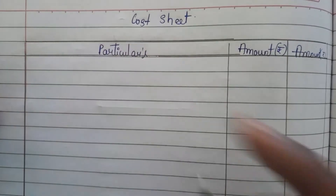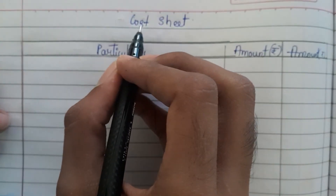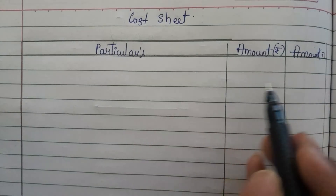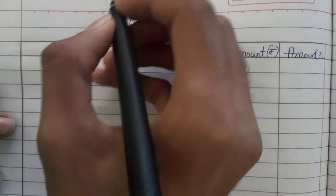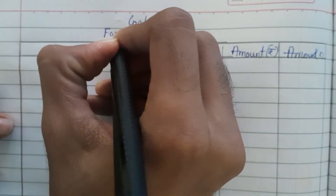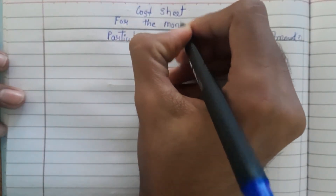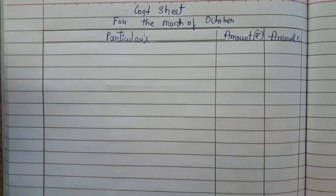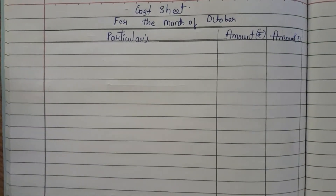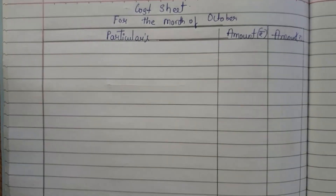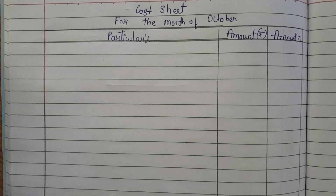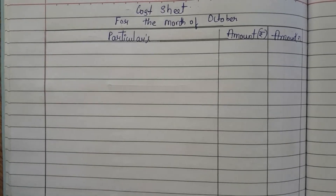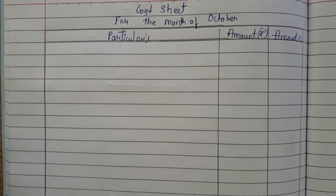So this is the format. On the top you should write 'Cost Sheet' with particulars, an inner amount column, and an outer amount column. You have to mention 'for the month of October' — this you have to mention without fail. Now, always first you need to find out the prime cost. In order to find the prime cost, you should add raw materials as well as direct wages.